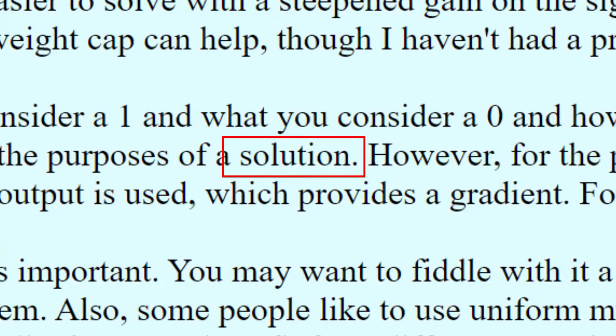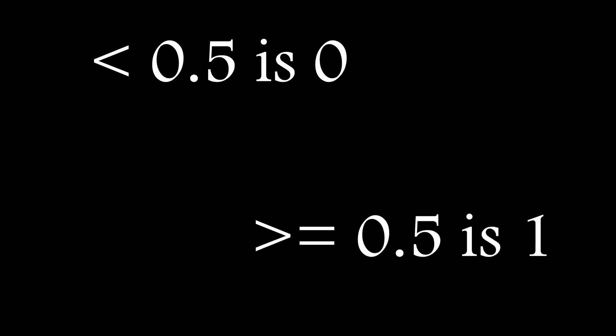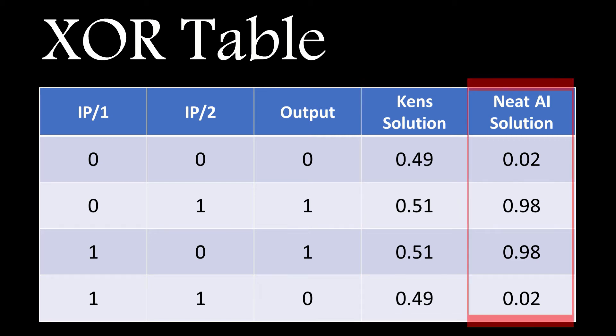He distinguishes between solution and fitness in his implementation and decided that anything below 0.5 is a 0 and anything above it is a 1. What that means is that he considers this to be a solution to the exclusive OR problem, which is a lot easier to achieve than my own approach, which is a bit more exact, and explains why my implementation takes a lot more generations to solve it.